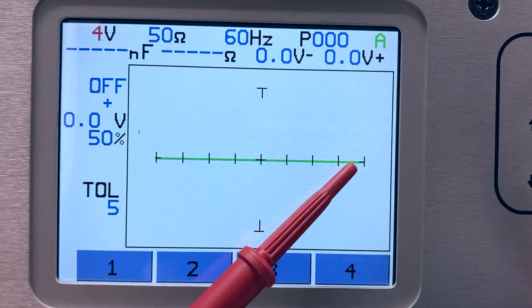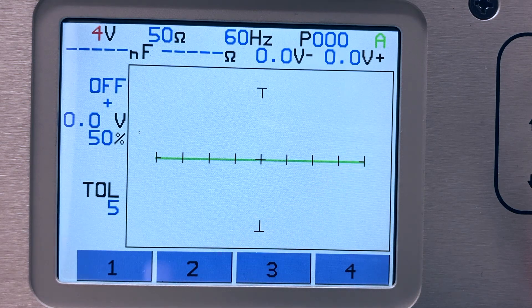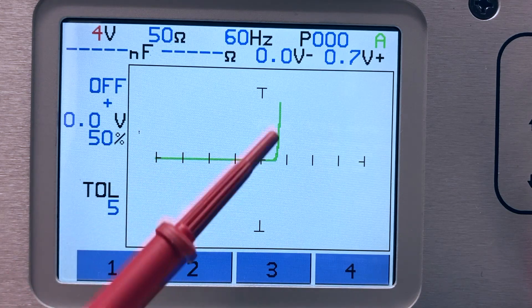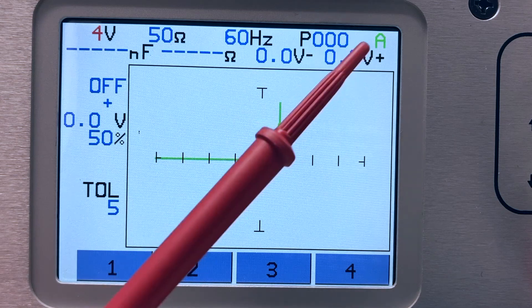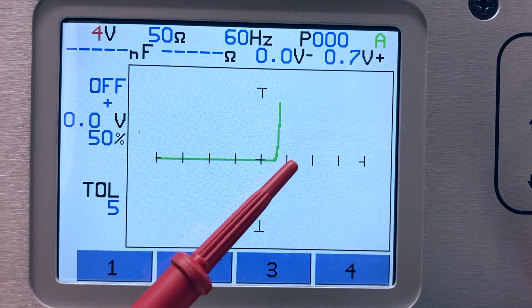Knowing this information, you can now calculate the approximate breakdown voltage of a diode based on where the signature changes from horizontal to vertical along the graticule. In this example, the breakdown voltage of the diode is approximately 0.6 volts.